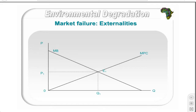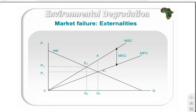In this diagram, MB represents the marginal benefit derived by society, equivalent to demand, and MPC represents the marginal private cost, equivalent to supply. Where externalities are not taken into account, the equilibrium is E1 with price P1 and quantity Q1. The production of this good creates an externality MEC (marginal external cost), resulting in a marginal social cost. If the externality were taken into account, consumers would demand less and only Q2 would be produced at price P2. Thus a negative externality leads to overproduction, and internalizing this cost by firms would lead to a higher price and reduced production.